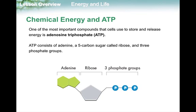ATP is by no means the most energetic molecule in your body. However, it is a good intermediate and acts like a $20 bill. Your $20 bill can't buy everything, but it can buy a lot of things, and you can put a bunch of $20 bills together to purchase a larger thing. That's what your body does — each little tiny movement inside of a muscle is powered by an ATP. One ATP alone could never move a muscle, but you put enough ATPs together and you get muscle contraction.